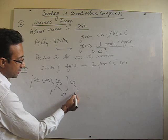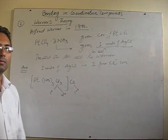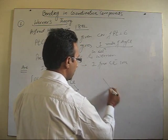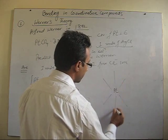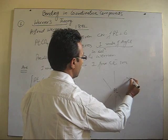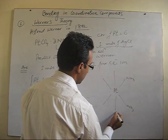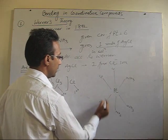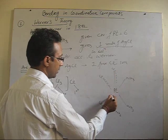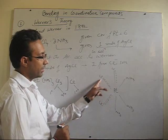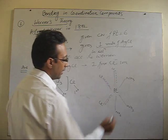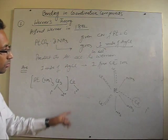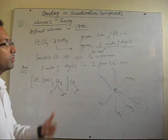The three Cl inside satisfy both primary as well as secondary equivalency, but the one outside is an ionizable counter ion satisfying only primary equivalency. So if we draw its structure according to Werner, at three positions there will be ammonia satisfying secondary equivalency only, and at other three positions there are Cl satisfying both primary and secondary equivalency, making them non-ionizable. And there is one Cl which satisfies only primary equivalency — that is the ionizable one.